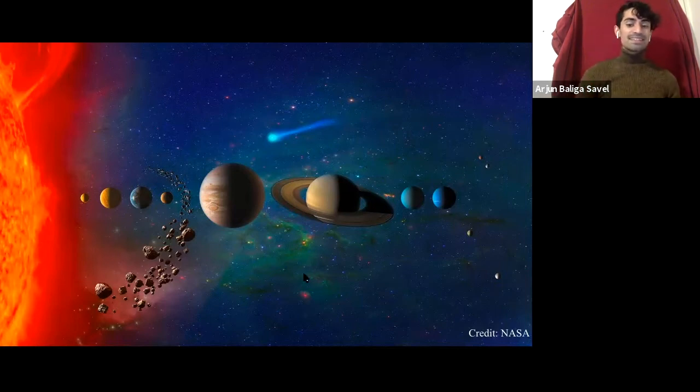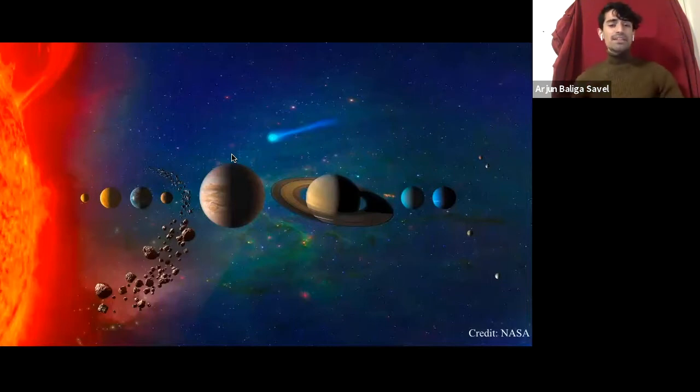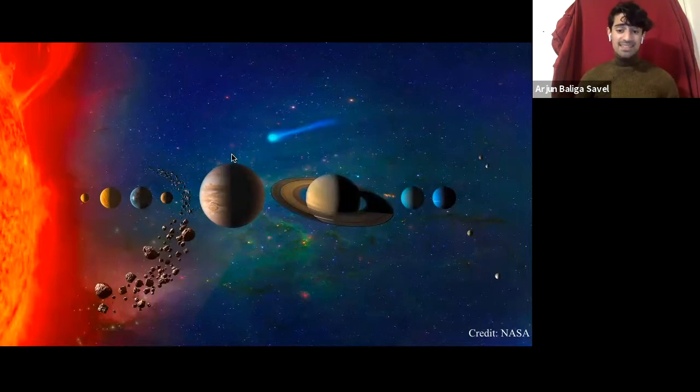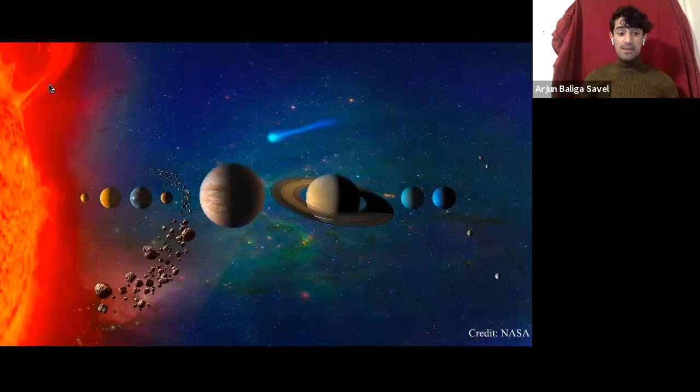But that relatively substantial atmosphere kind of pales in comparison to what you see when you move farther out into the solar system. These gas giants, aptly named, are really dominated by this gas. Again, hydrogen, helium, the most dominant elements in the universe. So even just looking in our solar system, we start to see that there's a lot of variety in what an exoplanet could give us from an atmospheric perspective.